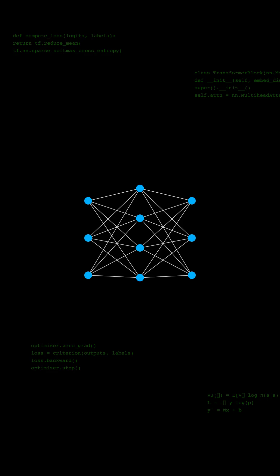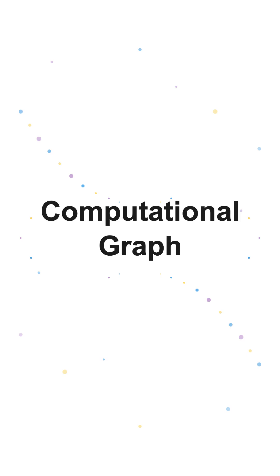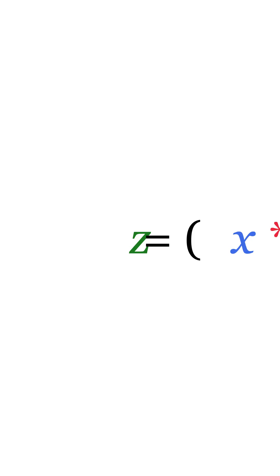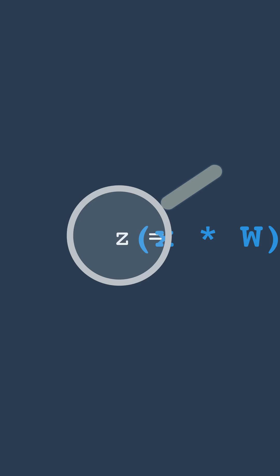Ever wondered how a massive model like GPT actually learns? It is not magic, it is math — organized brilliantly by something called a computational graph. Let us break it down with a simple operation. At its core, this is all a neural network is: a giant nested mathematical expression.